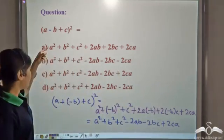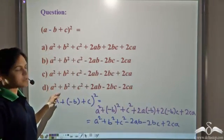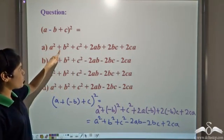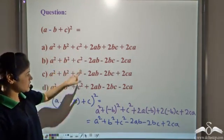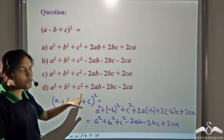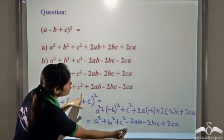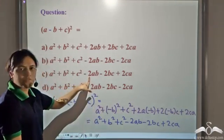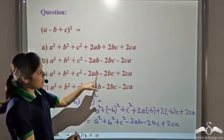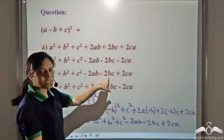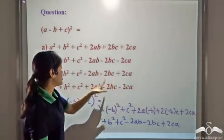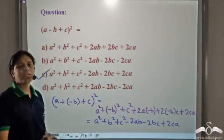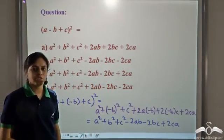So we get a² plus b² plus c² minus 2ab minus 2bc plus 2ca. Comparing with the options — we have a², b², c² in all four, but we need negative 2ab, negative 2bc, and plus 2ca. So this is the correct option.